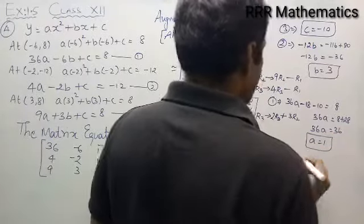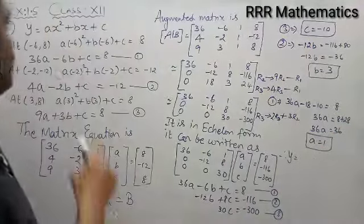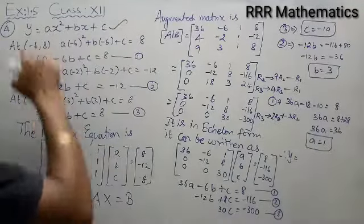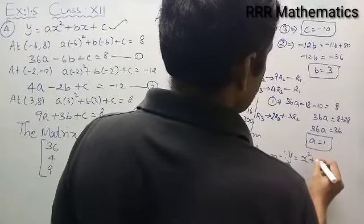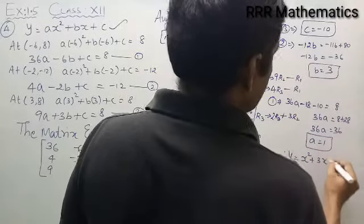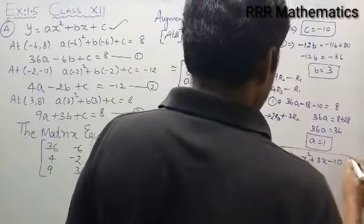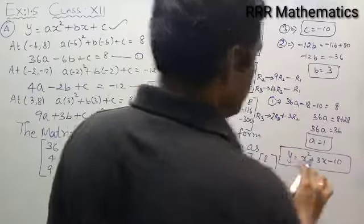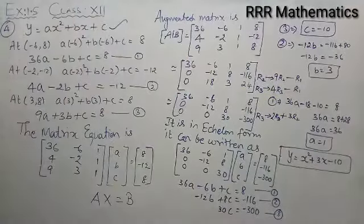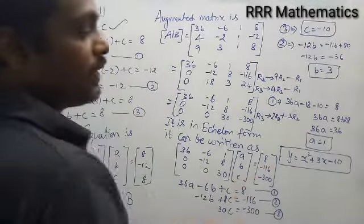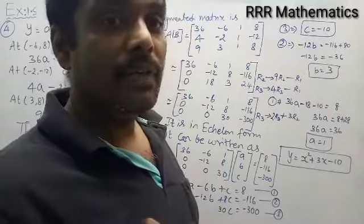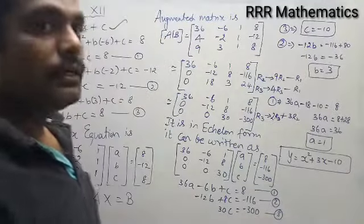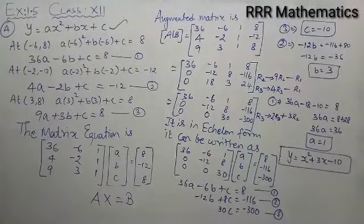After getting a, b, c values, substitute back: y = ax² + bx + c becomes y = x² + 3x − 10. But in this case, you want to verify whether he will meet his friend. He is at the point (7, 60). Just substitute x = 7 into the equation.